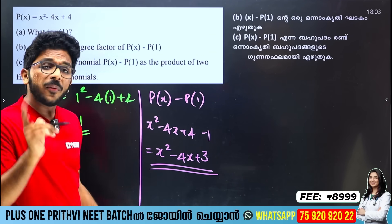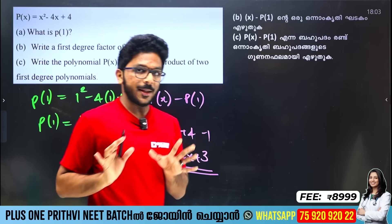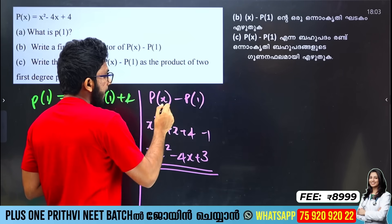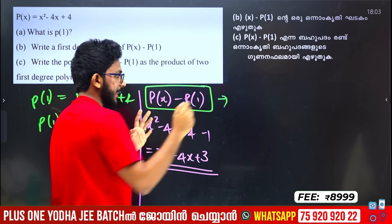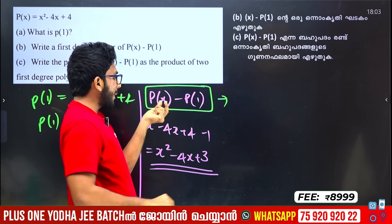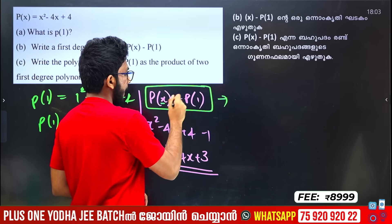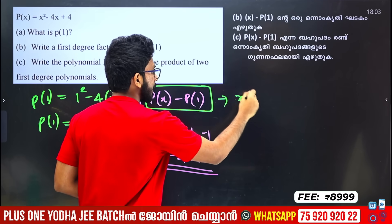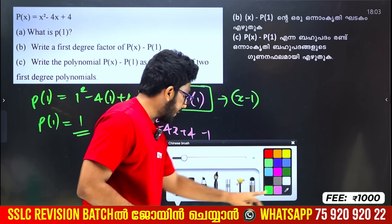We need to find a factor in the first degree. Since P of 1 equals 1, x minus 1 is a factor of P of x minus P of 1. I guarantee x minus 1 is a factor. The sum of roots is −(−4) equals 4, the product is 3, so the two numbers are 1 and 3.